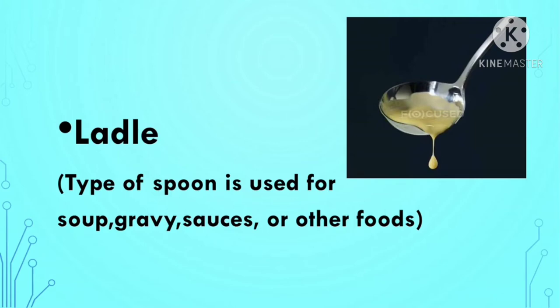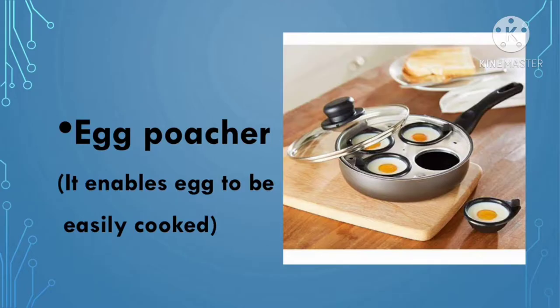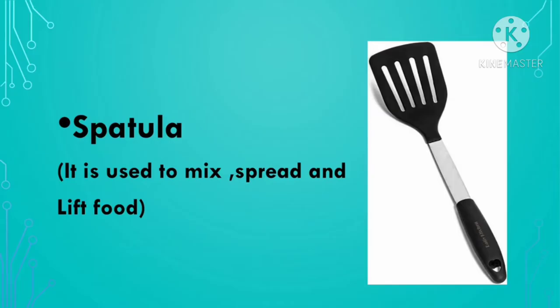Colander is used for draining and washing food. Egg poacher enables eggs to be easily cooked. Spatula is used to mix, spread, and lift food.